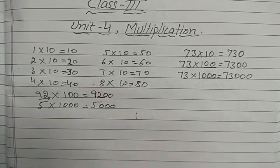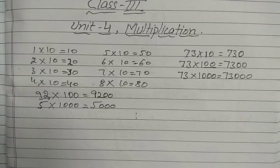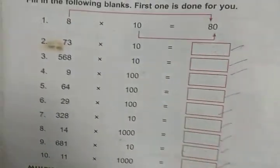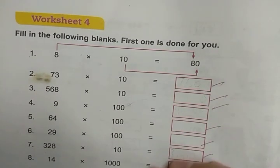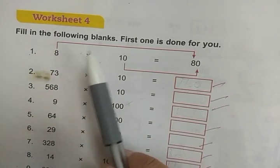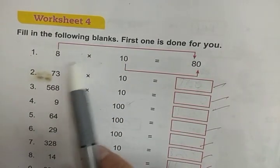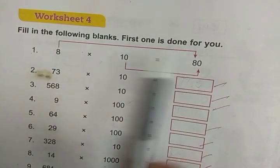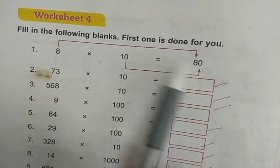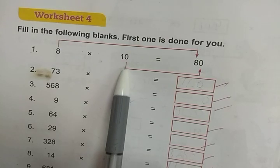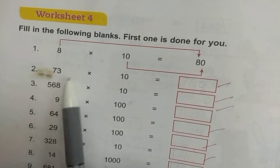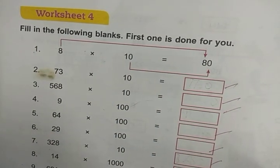Now let us do Worksheet number 4. One question is already done for you. In the following blanks, the first one — 8 multiplied by 10 — we have written 8 first, then counted the zeros in 10: there is 1 zero, so we write 1 zero on the right side. In the same way we have to write the remaining answers.